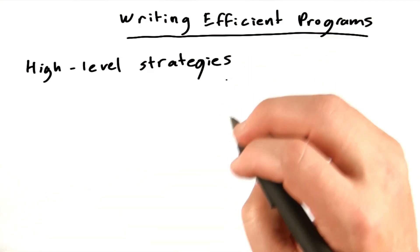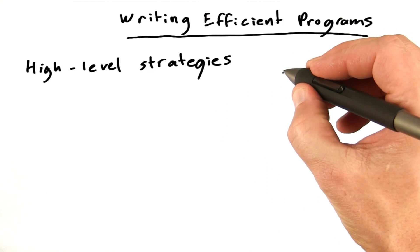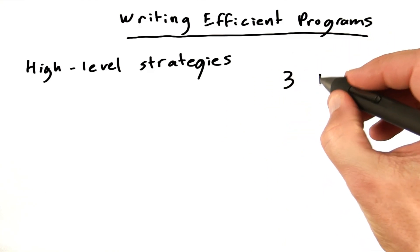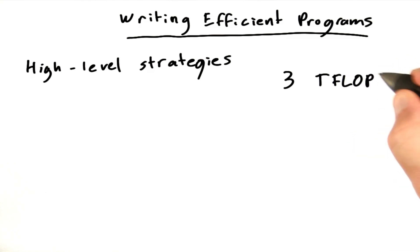So the first thing to keep in mind is that GPUs have really incredible computational horsepower. A high end GPU can do over 3 trillion math operations per second. You'll sometimes see this written down as TFLOPs.